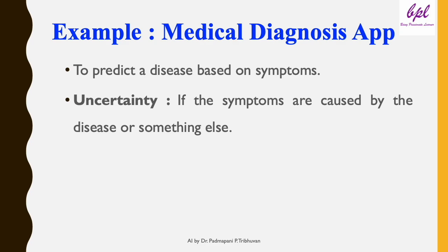To handle this uncertainty, AI relies on probability to make predictions. Probabilistic reasoning helps AI quantify and manage uncertainty, enabling it to make the best possible decisions even with incomplete or noisy data.